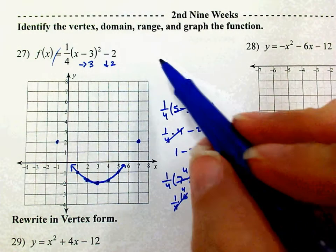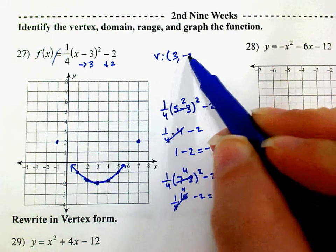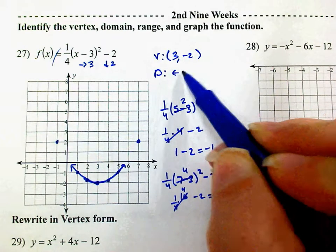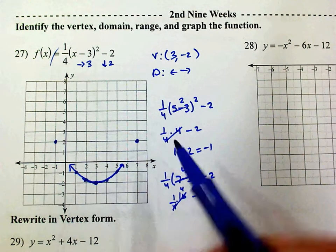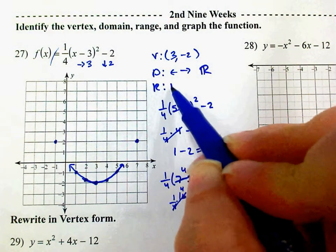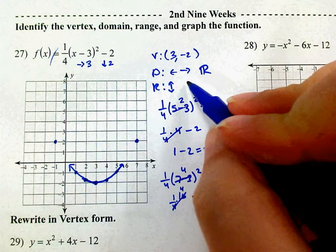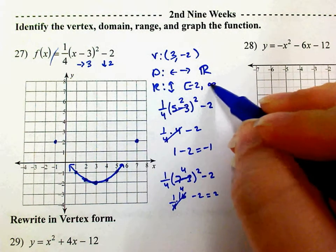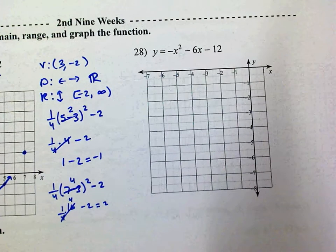The vertex is at (3, negative 2). Domain is left and right — does it go all the way left and all the way right? Yes, it keeps going. Range is up and down. Does it go all the way down? No — the lowest it goes is negative 2. Does it go all the way up? Yes. So the range is negative 2 to infinity.